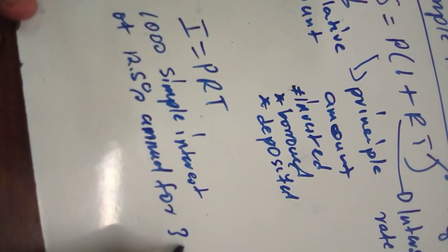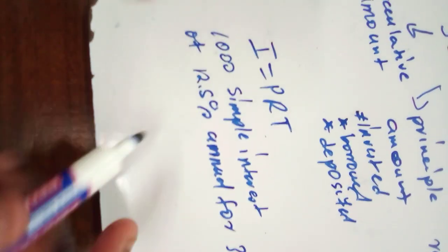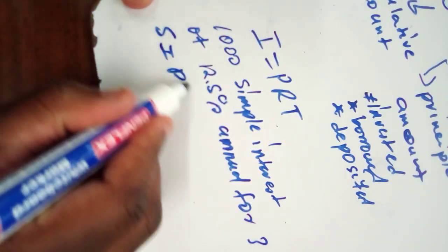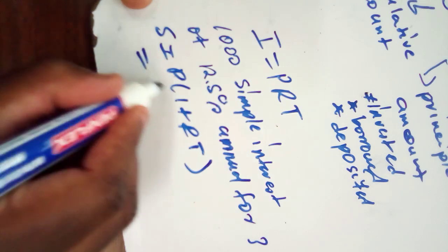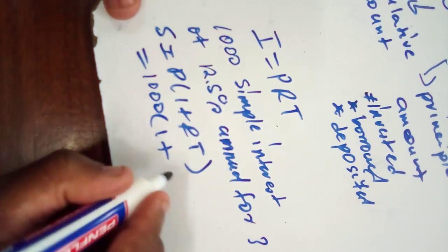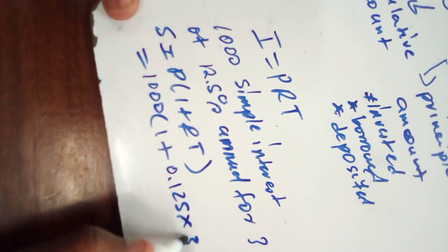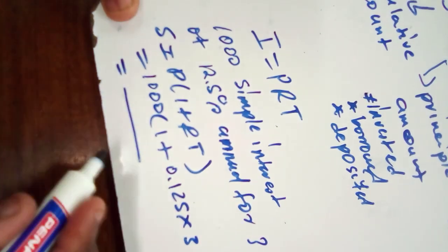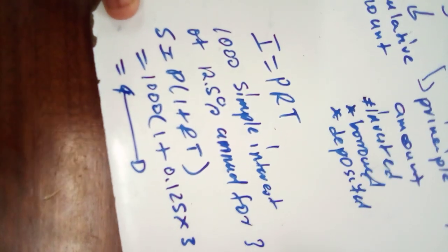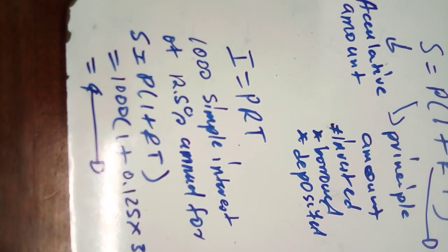So what will happen here, if you have to calculate the accumulative amount, we are going to use S equals to P in brackets 1 plus RT. Then our principal amount is the money you invested, which is $1,000, then bracket 1 plus R, the interest rate which is going to be 0.125 multiply by three years. Then after that you just use your calculator and you're gonna get the value of the amount that you need.